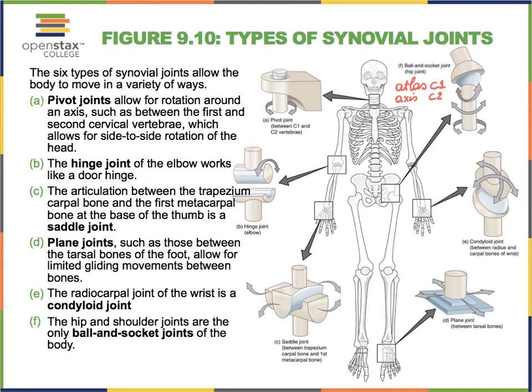The axis gets its name because it has a tooth-like bone marking that sticks out and fits nicely in an opening in the atlas. This structure of the axis fits inside an opening of our atlas such that the atlas can easily rotate. This is what allows our head to move from our left shoulder to our right shoulder and back.